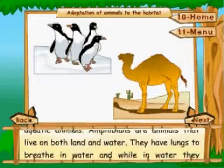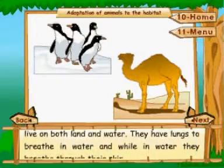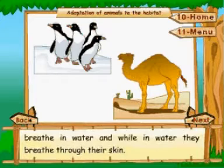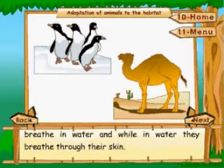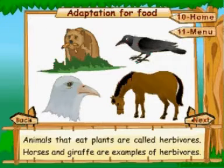Amphibians are animals that live on both land and water. They have lungs to breathe on land, and while in water they breathe through their skin.